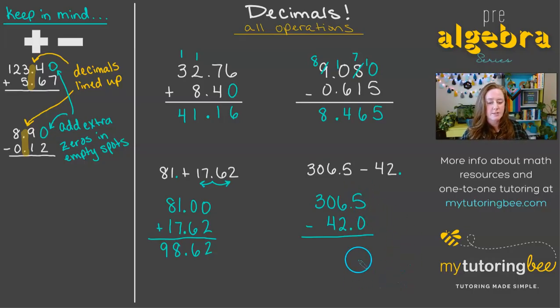Now we can start subtracting. 5 minus 0 is 5. Let's drop our decimal down. 6 minus 2 is 4. 0 minus 4, we can't do that. So we're going to regroup. This becomes a 10. 10 minus 4 is 6, and then we get 2.